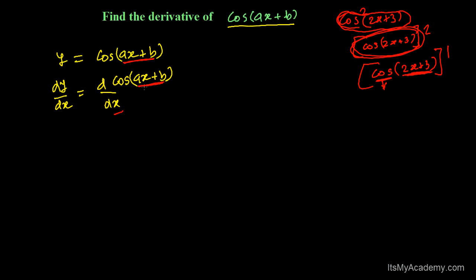I have to differentiate in the next stage with respect to ax + b. So I will be writing here: derivative of cos(ax + b) with respect to ax + b.